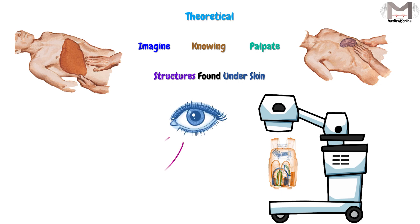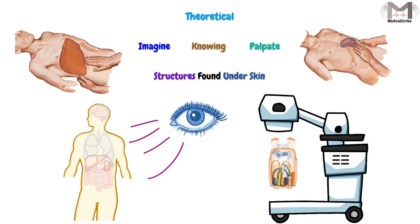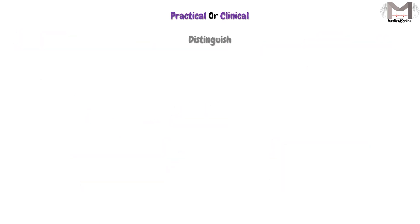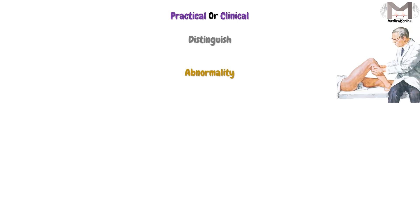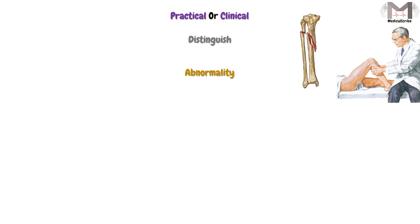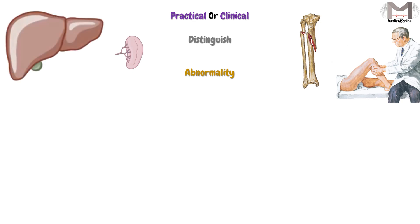We will be able to visualize the structures found under the skin. The practical or clinical goal is to distinguish any abnormality while palpating the regions, because we already know what is there in the normal state, so we can detect any abnormality. In order to achieve these two goals, we must first understand the anatomy of the deep structures, so when we palpate or inspect, we are oriented to what we need to find by correlating anatomical information with our examination.